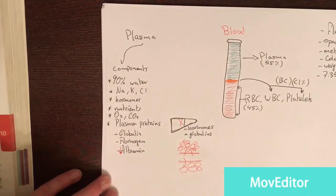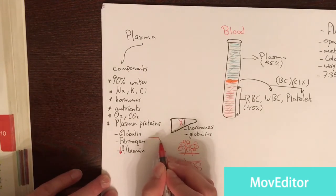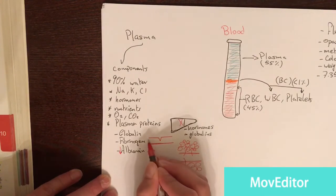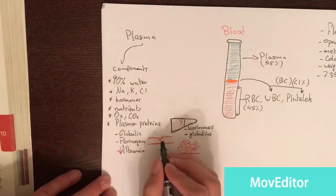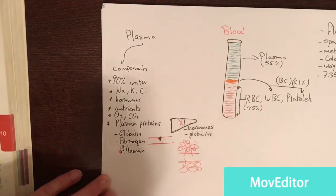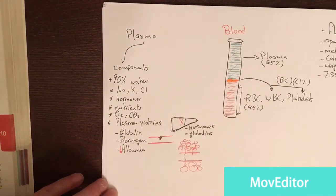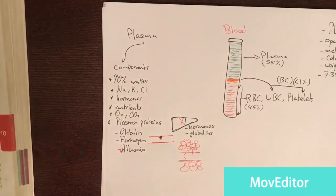Now, fibrinogen is the molecule that will help in sealing of blood clots. Let's say this is a blood vessel, and this blood vessel was injured in this side. Fibrinogen will help in sealing the area that was injured in the blood vessel. Globulin, also known as immunoglobulin, or antibodies will help us in fighting of infections.